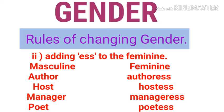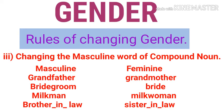The third rule is that we change the masculine part of a compound word when converting to feminine. For example, boyfriend changes to girlfriend, grandfather changes to grandmother — notice the masculine word 'father' is changed to 'mother'. Bridegroom becomes bride, milkman becomes milkwoman, and brother-in-law becomes sister-in-law. The masculine word within the compound is what changes.